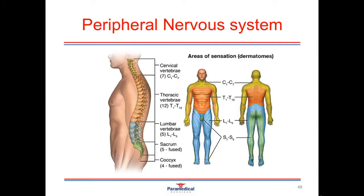All the nerves leaving the spinal cord going out to the tissues and returning make up the peripheral nervous system. On the right hand side, there's a diagram labeled areas of sensation, or dermatomes. These dermatomes are the different divisions in the body that a single pair of nerves leaving the spinal cord would cater to. Nerves from the top of the spine cater to the top portions of the body, and nerves from the bottom of the spine cater to the lower limbs and bottom portion of the body.